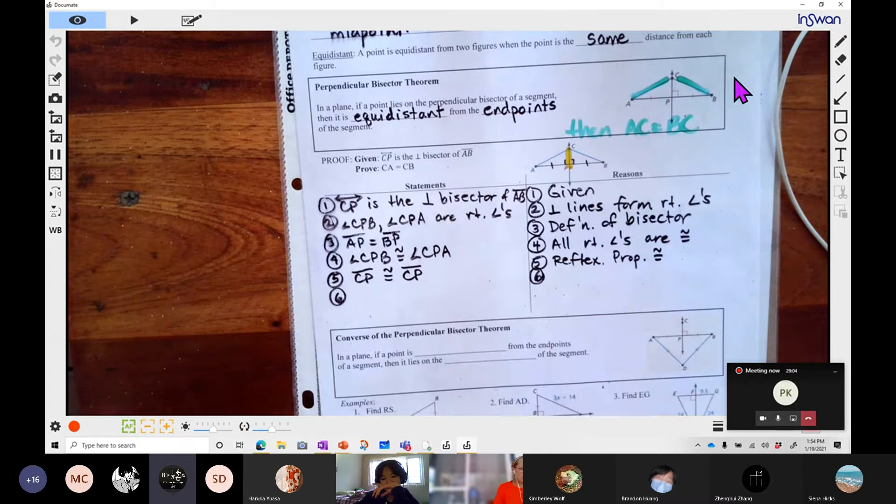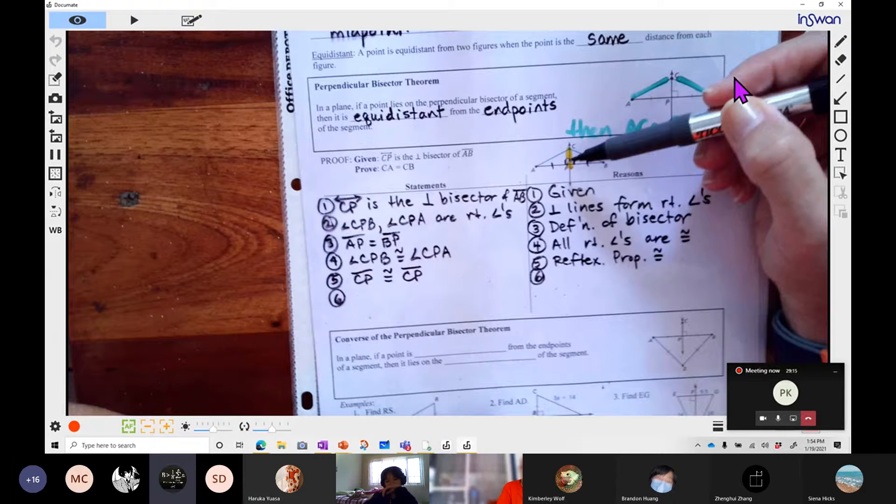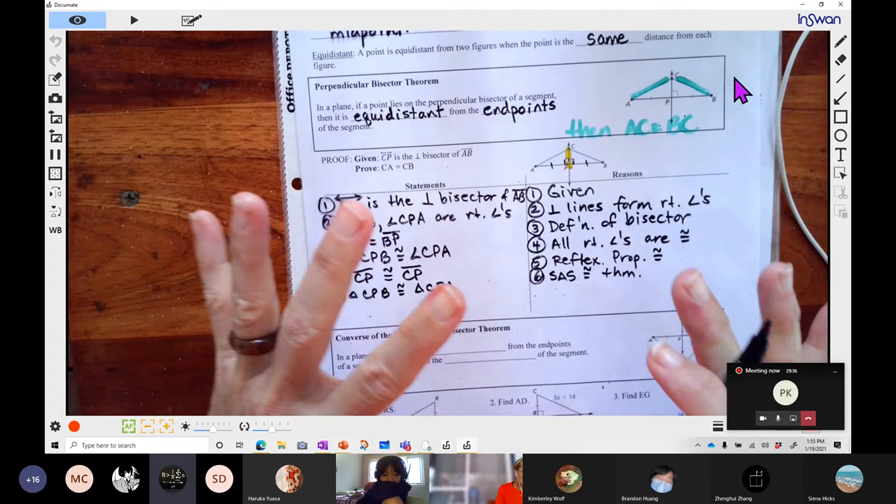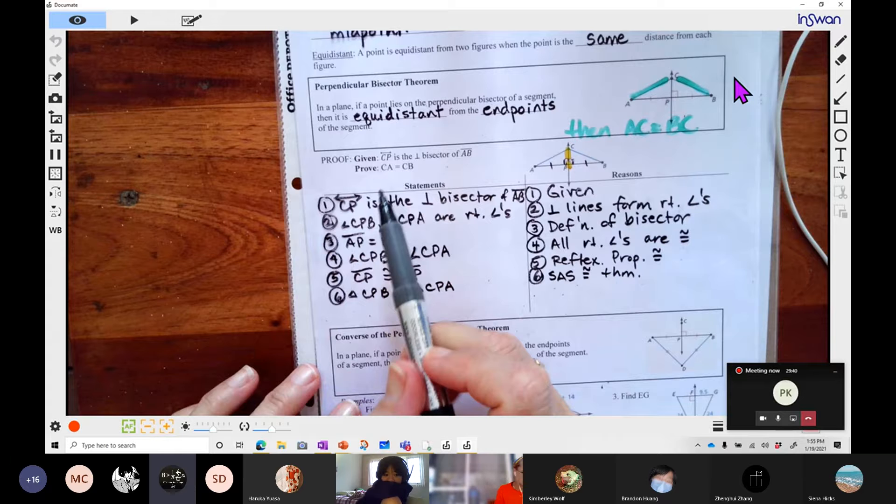Now is when I want you to notice what all you have. You have a side here that's congruent to this side. You have an angle here that's congruent to this angle. And then you have this side that's congruent to this same side. So we can say that these triangles, CPB and CPA are congruent by the side angle side congruence theorem. Now that we know that those two triangles are the same, what I want to get to is that CA equals CB.